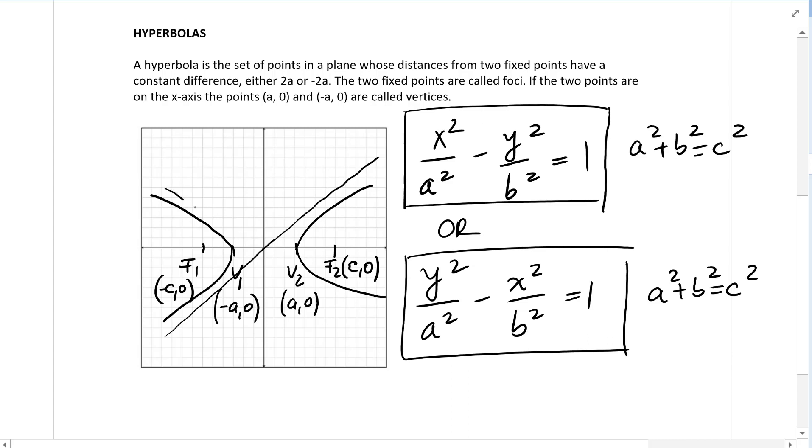The slope of the asymptote: how do we get from one point to this point? We go down b and then over a, so the slope of that asymptote would be b/a, and the equation would be y = (b/a)x.